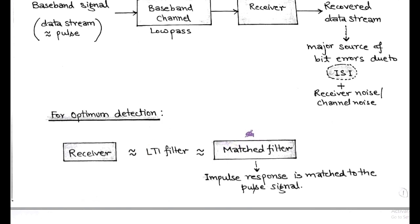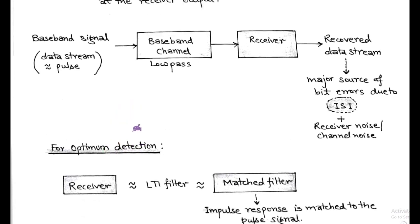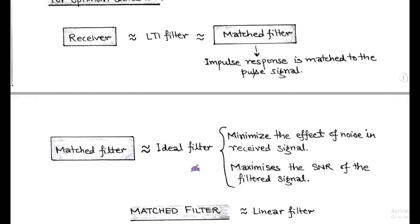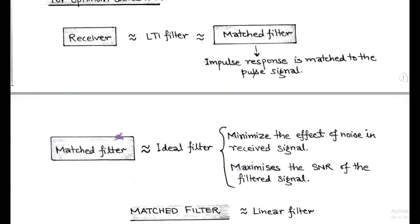In Baseband Transmission, we call it a matched filter because the impulse response of the LTI filter is matched to the incoming pulse signal. For optimum detection in Baseband Transmission, we use a matched filter at the receiver side. This matched filter is an ideal filter that minimizes the effect of noise in the received signal and maximizes the signal-to-noise ratio of the filtered signal.